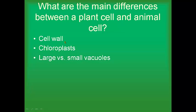These are the three main differences, and they're super important because the Cambridge test usually has at least one question about the differences between a plant and an animal cell. Plant cells have cell walls; animal cells do not. Chloroplasts are in plant cells for photosynthesis; animal cells don't have them. Plant cells have large vacuoles; animal cells have very small vacuoles.